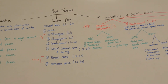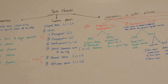The lumbar plexus is a nerve network composed of the ventral rami of L1 through L4 nerves. The nerves in this lumbar plexus are the ilioinguinal nerve, the iliohypogastric nerve, the genitofemoral nerve, the lateral cutaneous nerve of the thigh, the femoral nerve, and the obturator nerve.